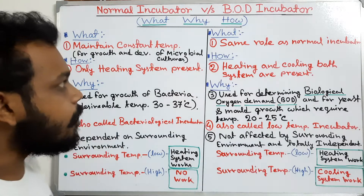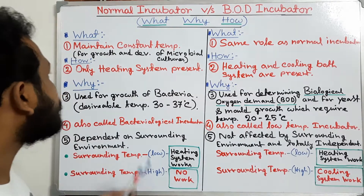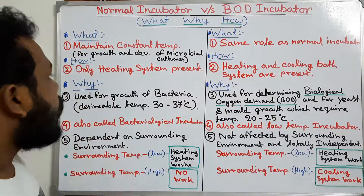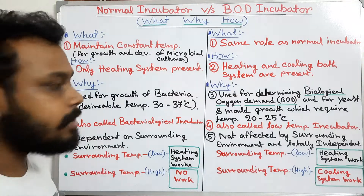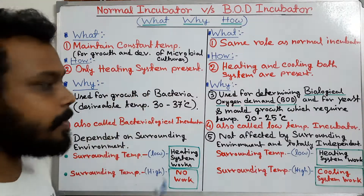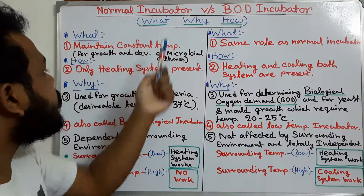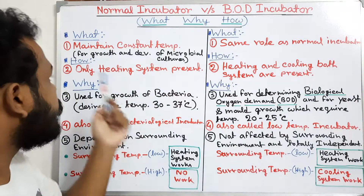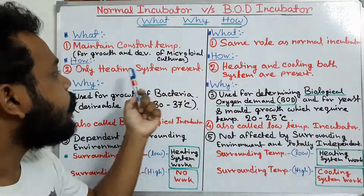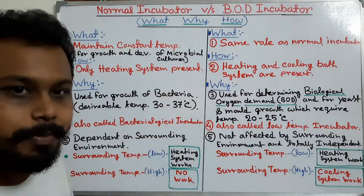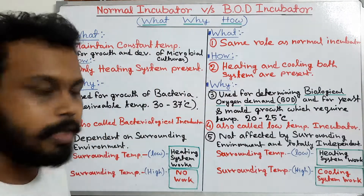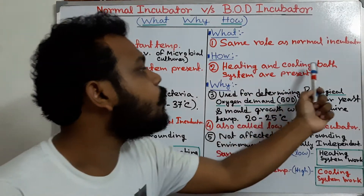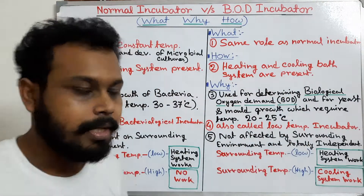So how can we differentiate them? We can differentiate them by their systems. The normal incubator has only a heating system — only a heating system is present. But in the BOD incubator, both heating and cooling systems are present.